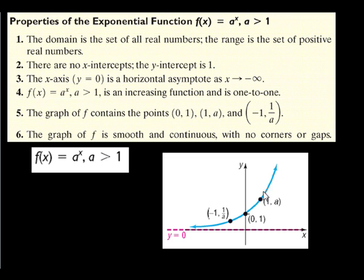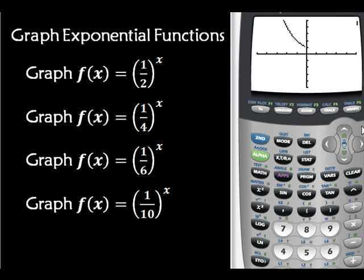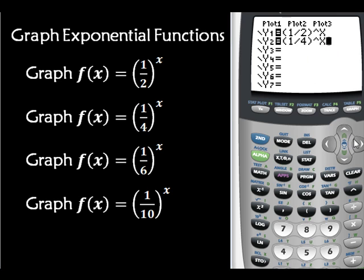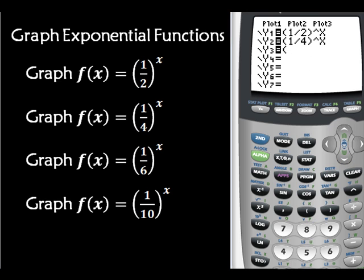The graph is continuous — there are no holes, no corners, no gaps. Let's graph these exponential functions with 0 < a < 1. Can you guess what's going to happen? Let's graph 1/2 to the x — and look at that, it's the other side. Let's try the next one. Interesting enough, it's still intersecting at (0, 1). You can probably guess what's going to happen for the rest of these.